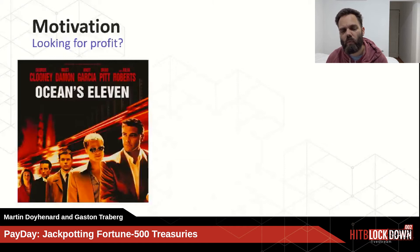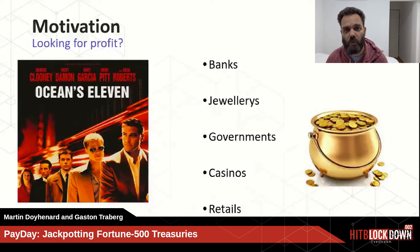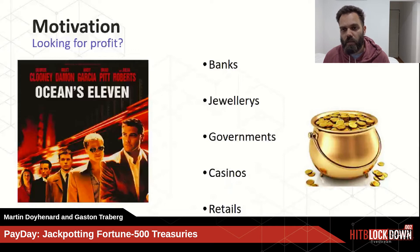What were we looking for when we started this research? We were looking for profit — a lot of profit. The first things we thought of were robbing a bank, governments, casinos, retail, juries — any institution or company that handles a lot of money. But the problem with all those targets is that you can end in jail or worse.